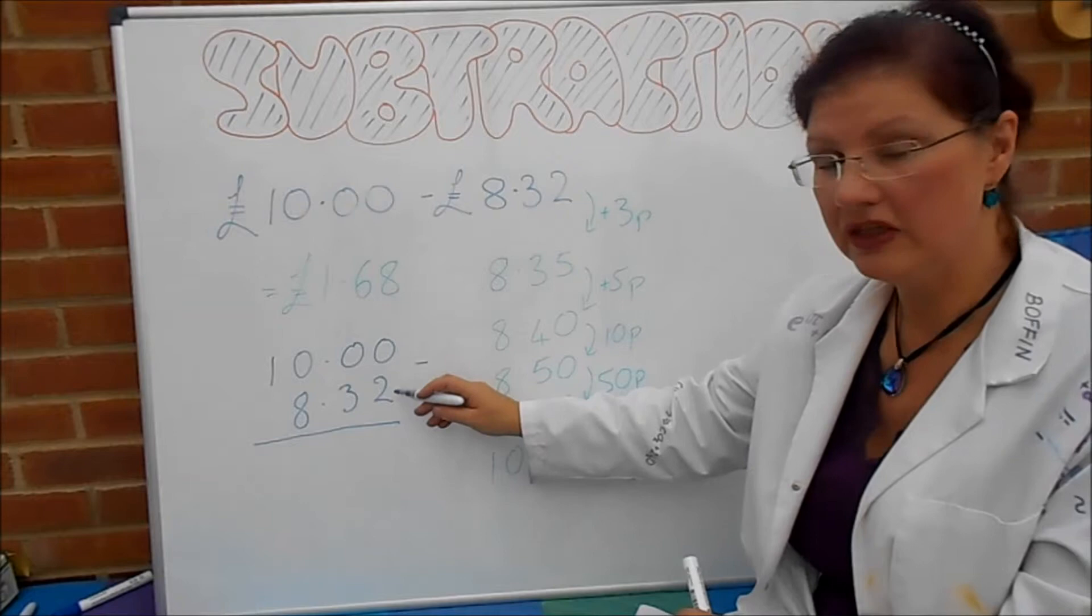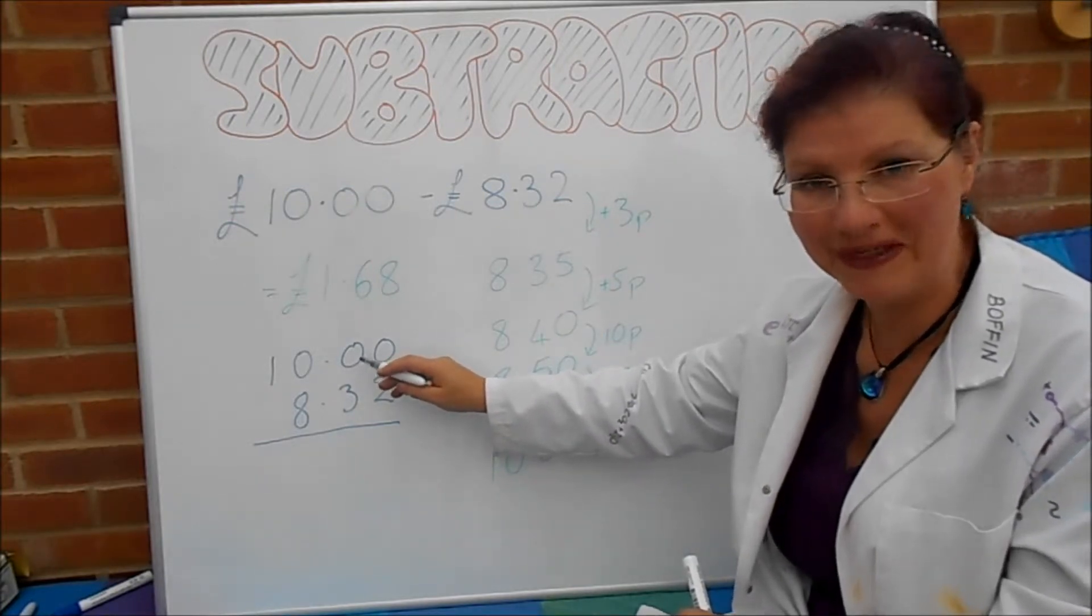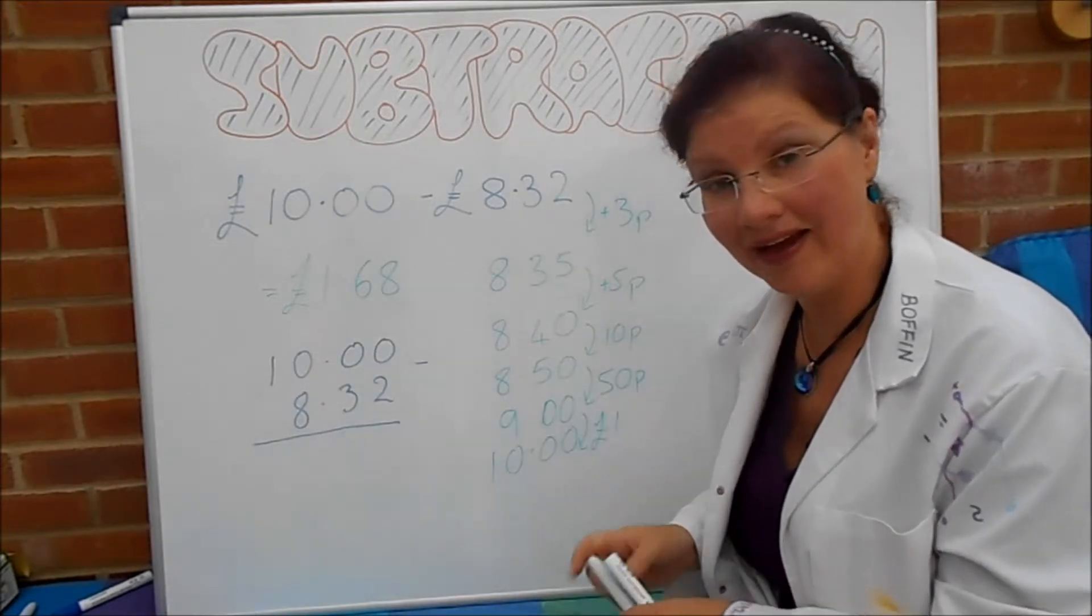So by column method we do 0 take away 2, can't do it. Unpack one of these. Oh, there aren't any. Unpack one of these. Oh, there aren't any. Unpack one of these. Aha! There's some of those.